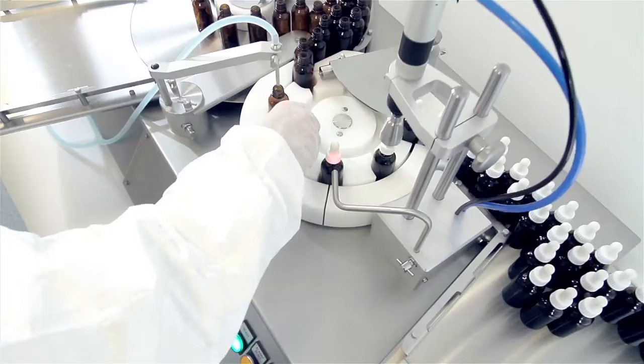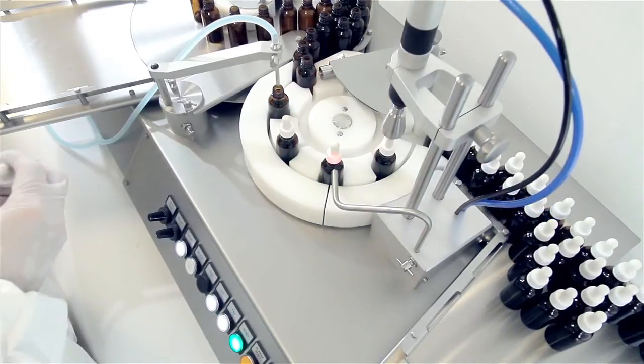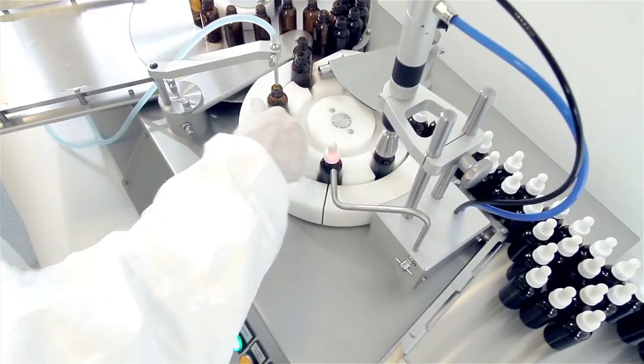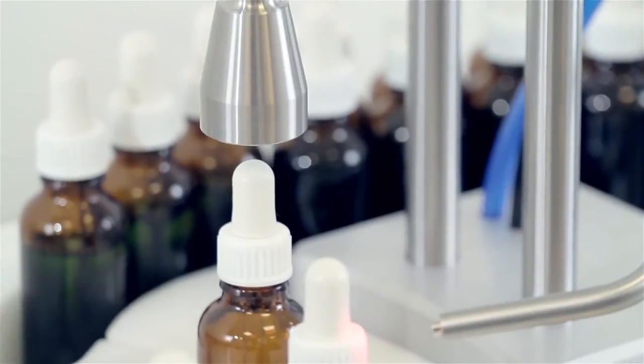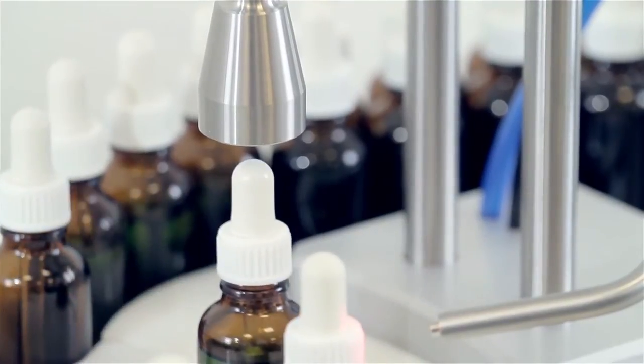Filled and capped bottles leave a standard FlexFeed 30 on trays. However, the machine can be customised with bottles being fed onto a conveyor into a labelling machine, further improving productivity.